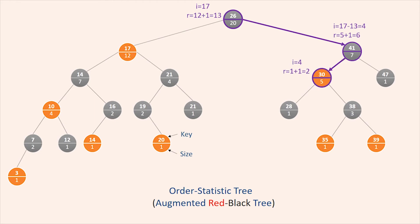After the recursive call, x is the node with key 30 and its rank within its subtree is 2. Thus, we recurse once again to find the (4 - 2) = 2nd smallest element in the subtree rooted at the node with key 38. We find that its left subtree has size 1, which means it is the 2nd smallest element. Thus, the procedure returns a pointer to the node with key 38. Because each recursive call goes down one level in the order statistic tree, the total time for OS-Select is at worst proportional to the height of the tree. Since the tree is a red-black tree, its height is O(log n), and thus the running time of OS-Select is O(log n) for a dynamic set of n elements.